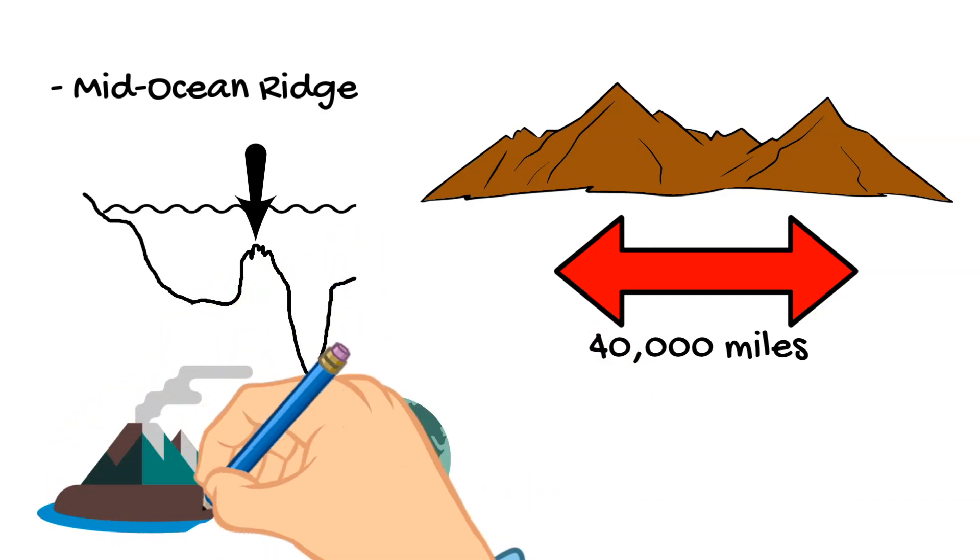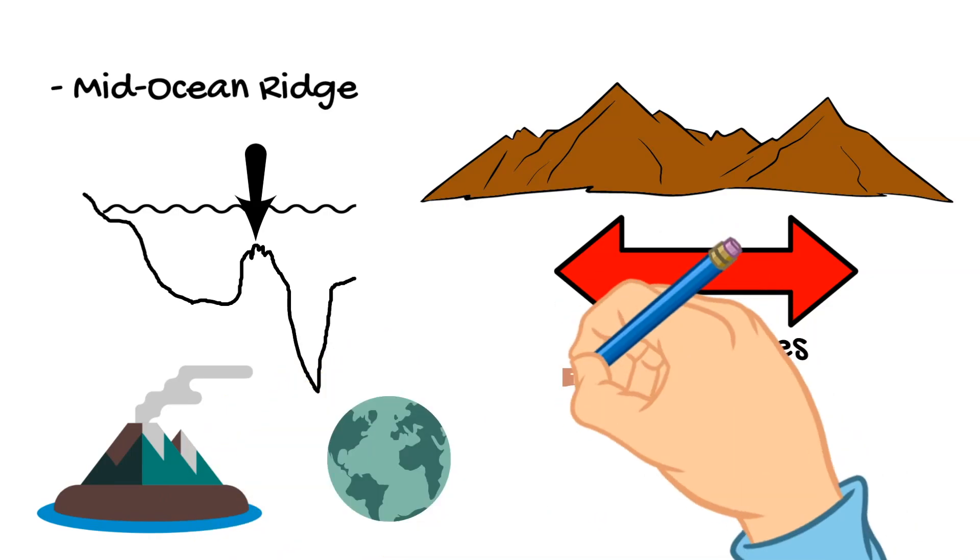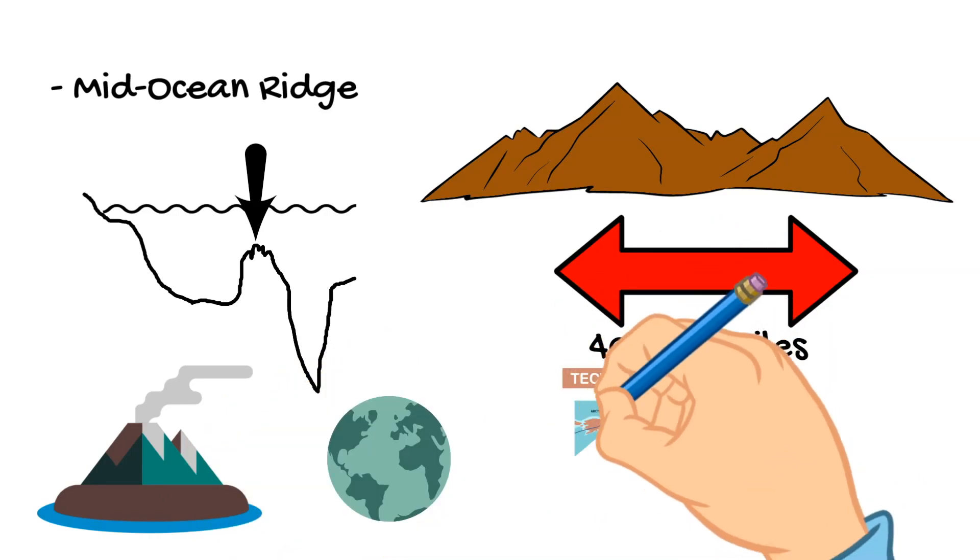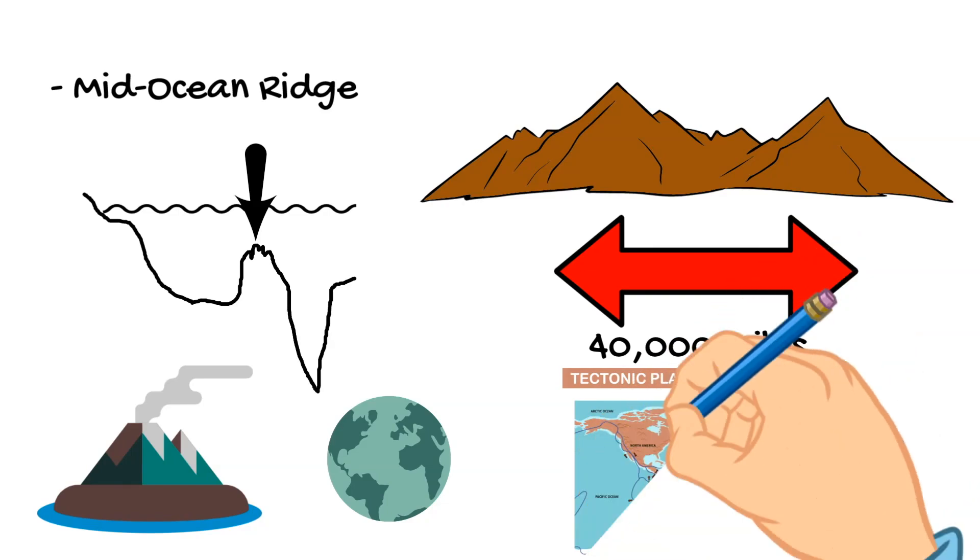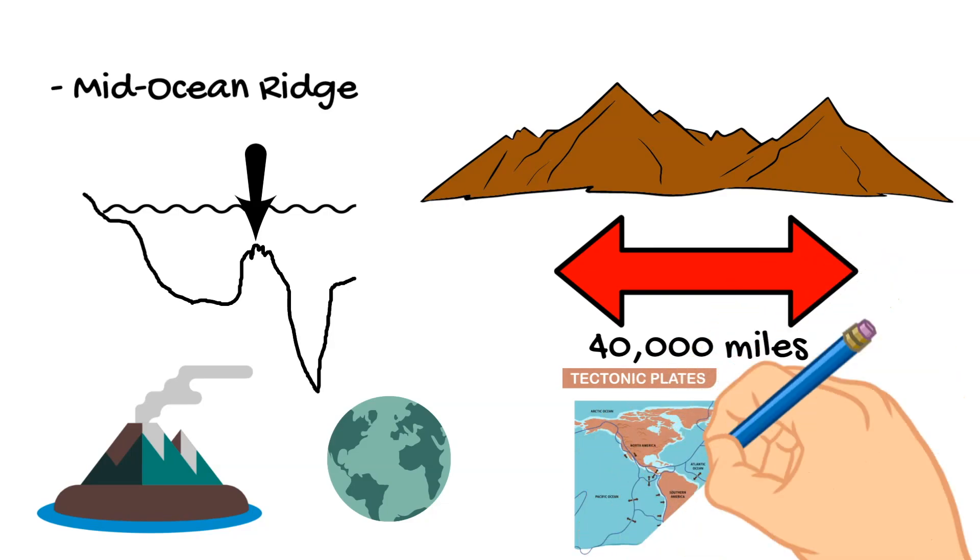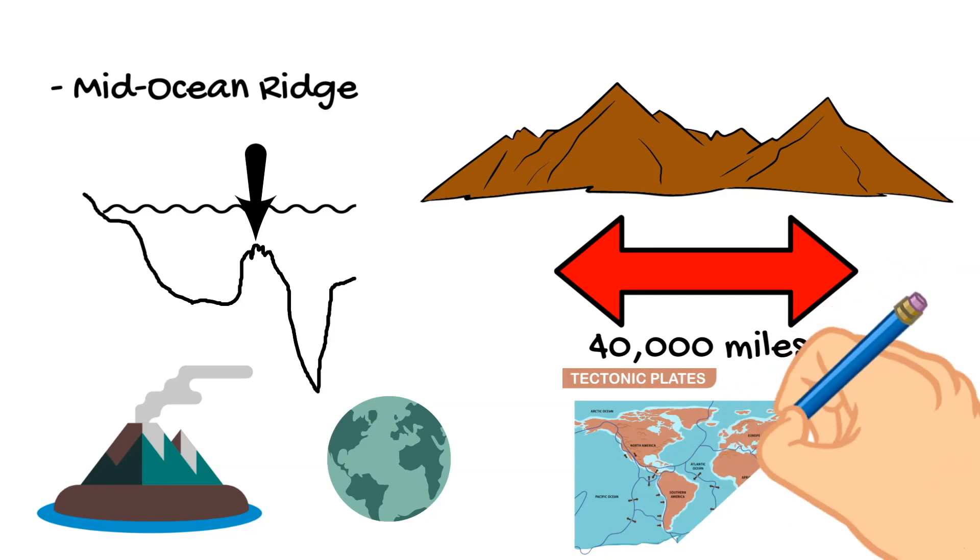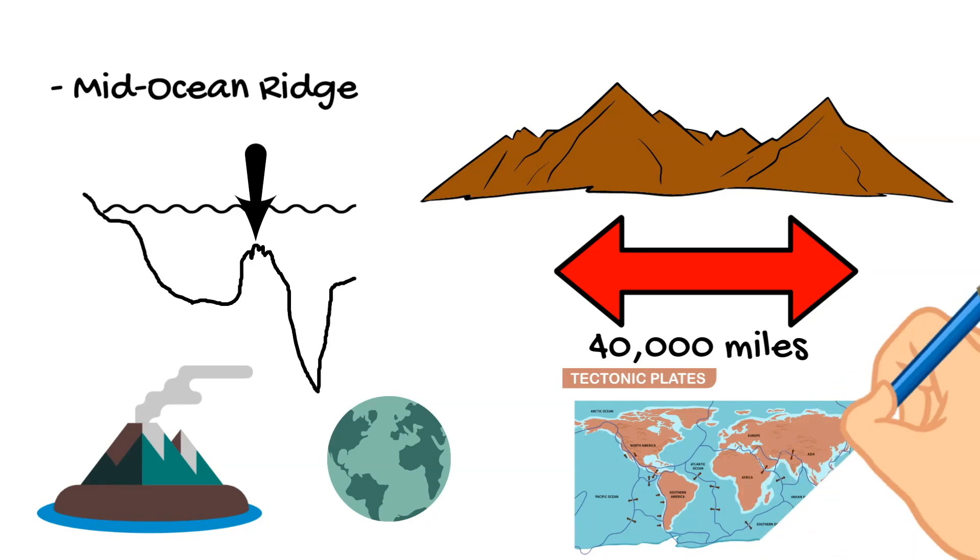This mid-ocean ridge is formed where two tectonic plates meet, which we've talked about tectonic plates a little bit in a previous video. This mid-ocean ridge is formed where two tectonic plates meet under the ocean. And when this happens, these ridges are made up along the ocean floor into a mountain range.